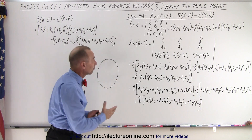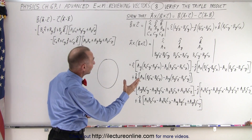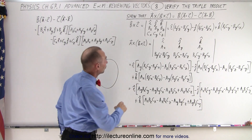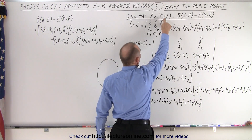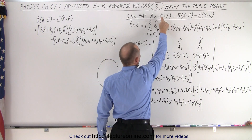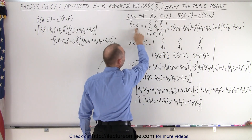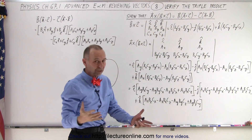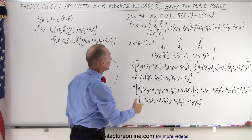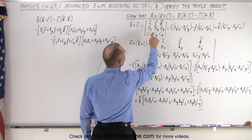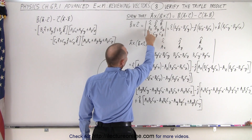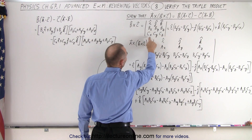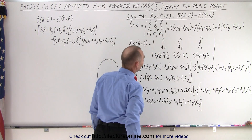We're going to start by showing what the left side of that equation looks like. We take the cross product of B cross C, which is set up as a determinant with I, J, K unit vectors in the first row, the X, Y, and Z components of B in the second row, and the X, Y, and Z components of C in the third row.